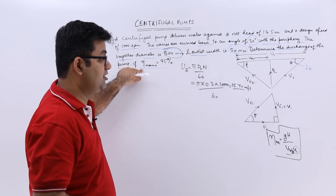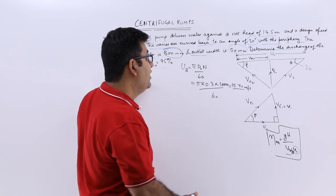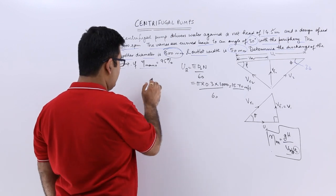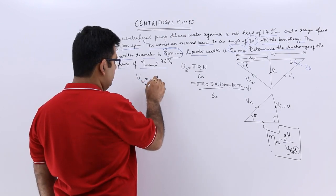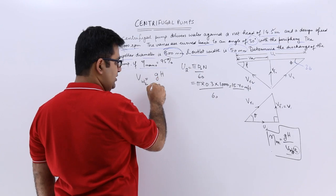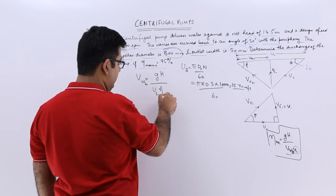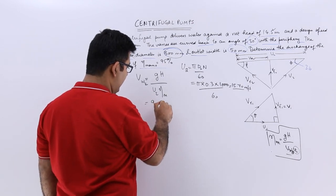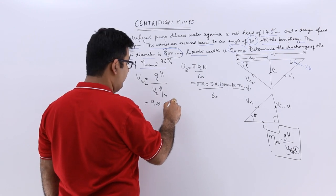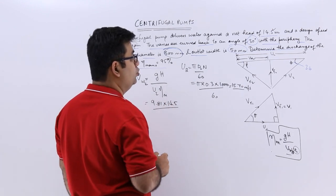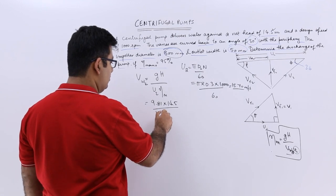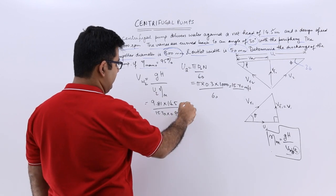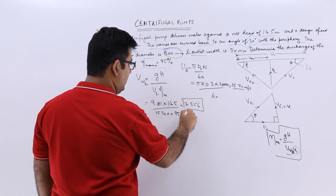the value of the manometric efficiency which is 0.95. We have the head as 14.5, so this would be Vw2 is equal to G into H upon U2 into eta manometric. So this would give me 9.81 into 14.5 upon U2 is 15.70 into 0.95, so this would give me a value as 9.556. This is Vw2.